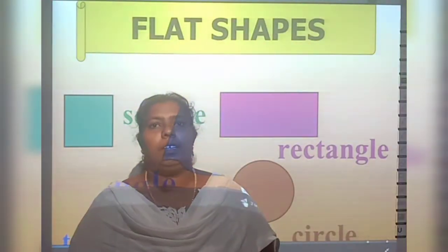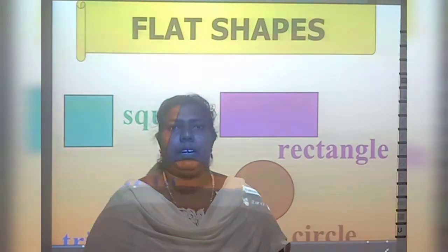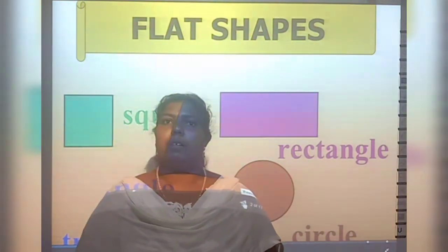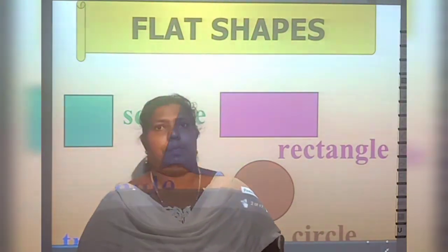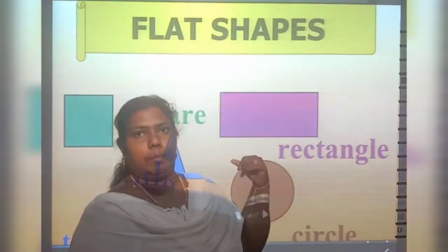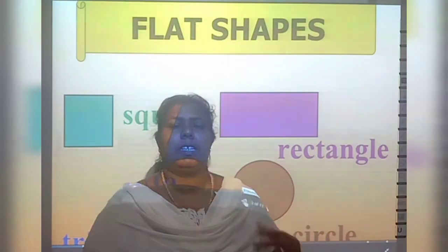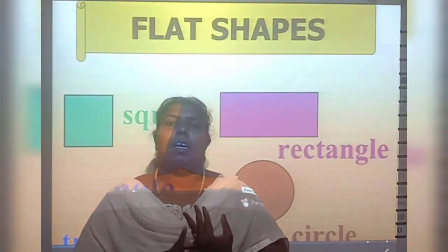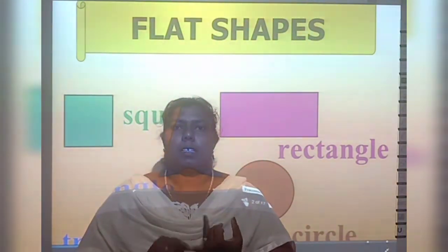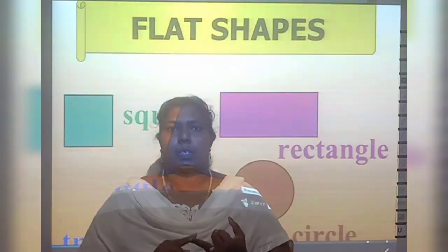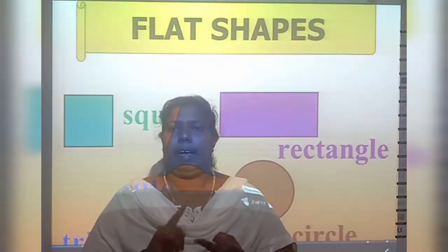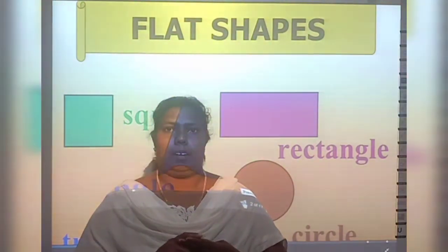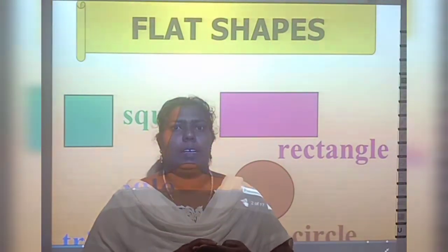Good morning children. In our previous class, do you remember what we have learned? Yes, we have learned the basic shapes. Four basic shapes — circle, square, rectangle and triangle.